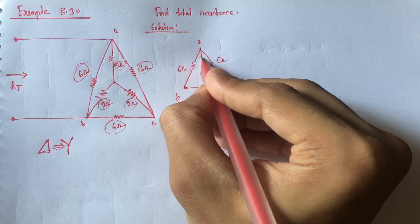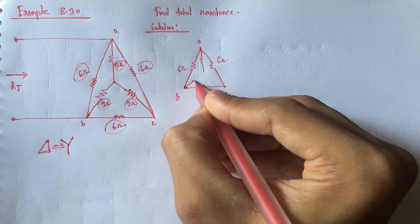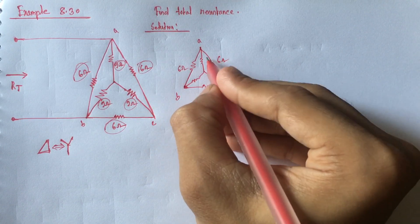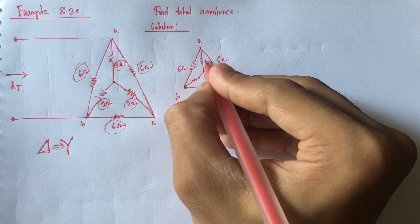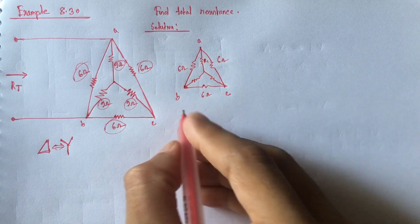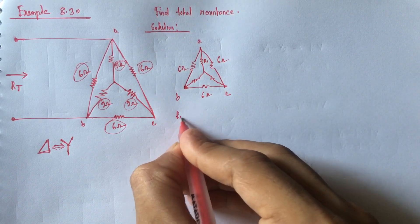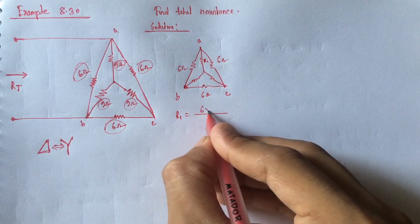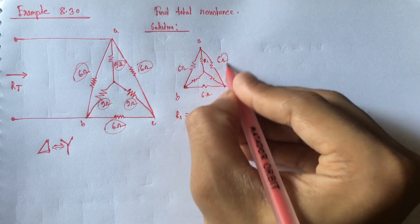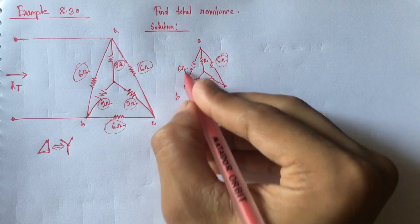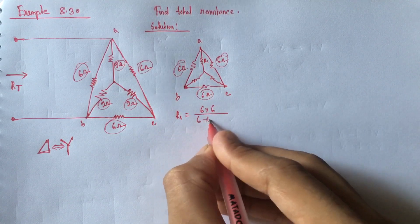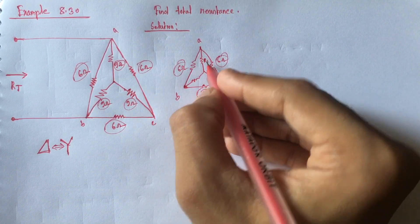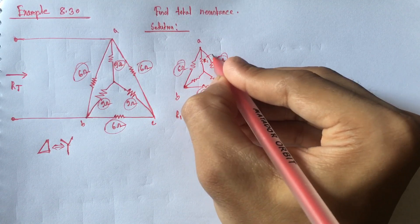The equivalent Y resistance will be as follows. What will be the value of this resistance? Let this be R1. R1 will be equal to the product of two adjacent resistances divided by the sum of all three resistances: 6 times 6 divided by 6 plus 6 plus 6, which gives 2 ohm. So R1 is 2 ohm.